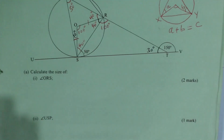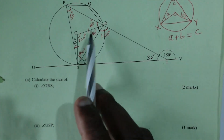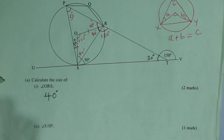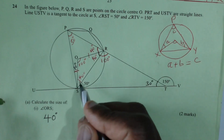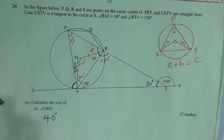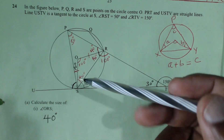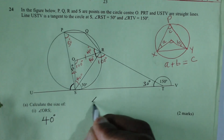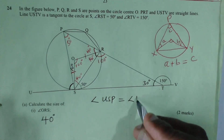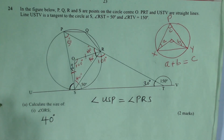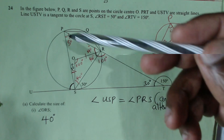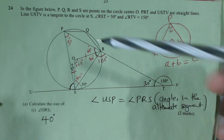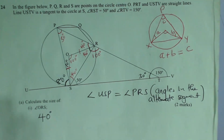Angle ORS is therefore 40 degrees. Moving to part a(ii), angle USP. Since USTV is a tangent, we use the alternate segment theorem: angle USP equals angle PRS in the alternate segment. Angle PRS is made up of 40 plus 40 equals 80 degrees, so angle USP equals 80 degrees.